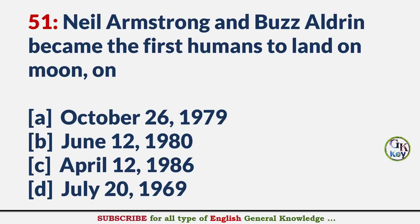Neil Armstrong and Buzz Aldrin became the first humans to land on the moon on? Answer D: July 20, 1969.